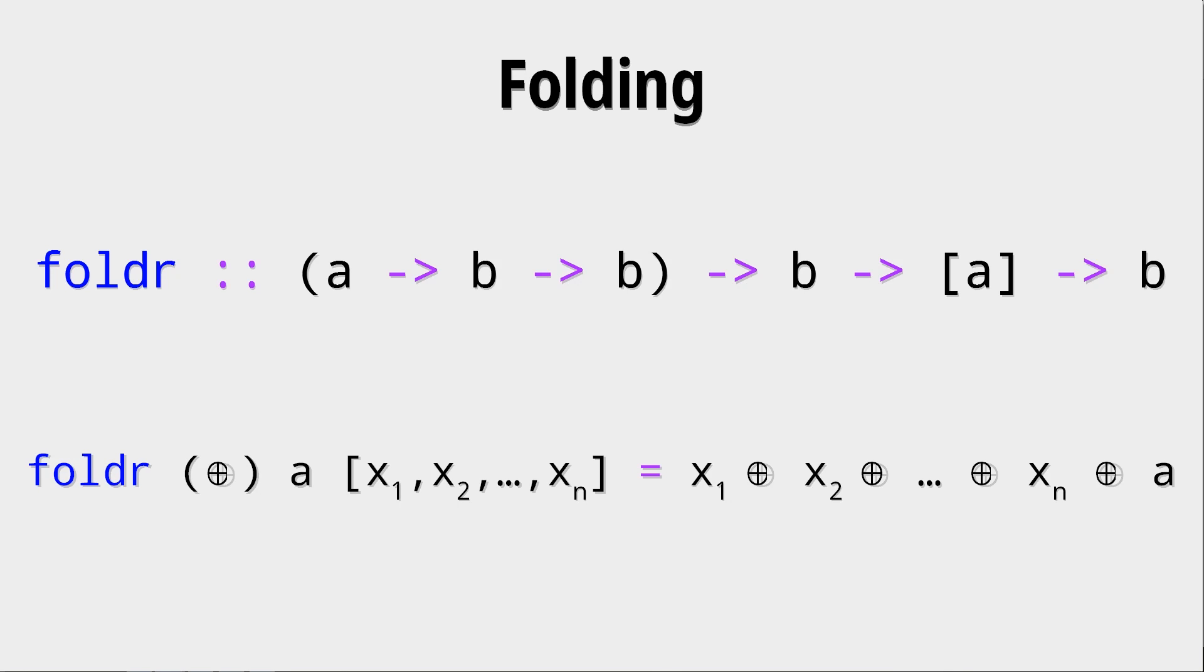So fold r is defined as the following. You have some operation, whatever that might be. It has to be a binary function of course. And then you have some starting value a, sometimes also called the accumulator. It depends on what context this folding is used, but let's just call it a starting value for now.